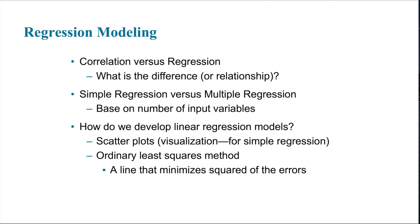What's the difference between correlation and regression? Correlation assumes the two items being tested have no dependence on each other — there's no assumed relationship between the two items. Regression is the opposite: we assume there's some kind of a relationship there and we're trying to figure out what it is and how tightly knit together they are.